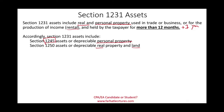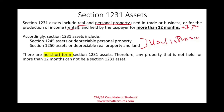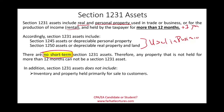Real property includes buildings and land — assets that cannot be moved. These two types of assets are treated differently. Both must be used in business — that's one criterion of Section 1231. The other criterion is the asset must be held more than one year. There is no such thing as a short-term Section 1231 asset.